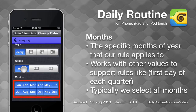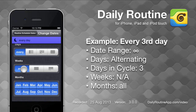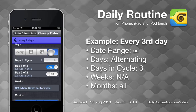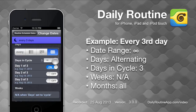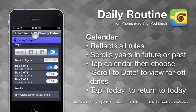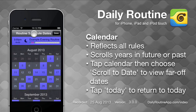In the month section, we can specify which months our rule applies to, with the default being all months. We want every third day, so we'll select the alternating days option, then change the cycle length to three. When we return to the calendar, we see that every third day is selected.